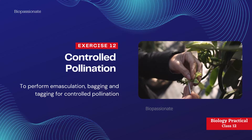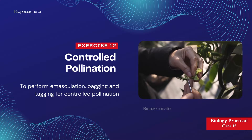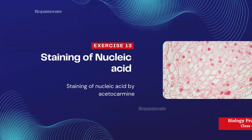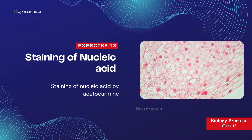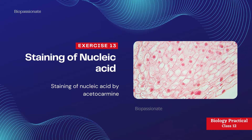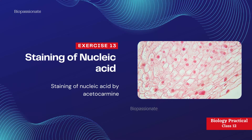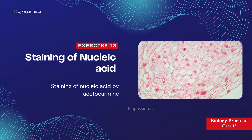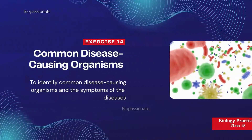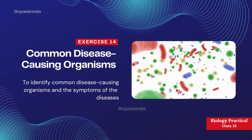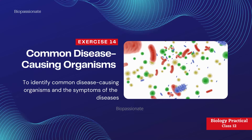Exercise number twelve: controlled pollination — to perform emasculation, bagging, and tagging for controlled pollination. It's also a very rare experiment. Exercise number thirteen: staining of nucleic acid — staining of nucleic acid by acetocarmine. It's a compulsory question for your practical examination.